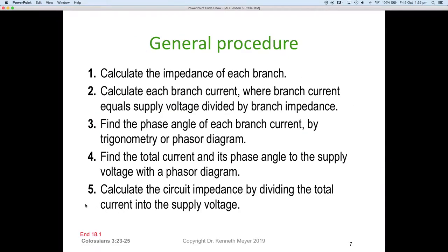Here's the general procedure. This one's worth writing down in your notebooks. Five simple steps. Number one, calculate the impedance of each branch. They may give you the impedance, the inductance, or the capacitive reactance and you've got to work it out. But at the end of the day, step one is calculate the impedance of each particular branch. Then calculate each branch current where the branch current equals the supply voltage divided by the branch impedance.